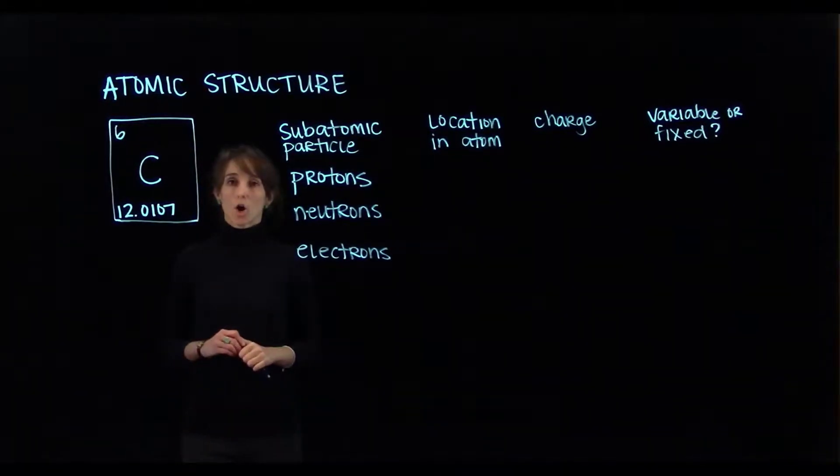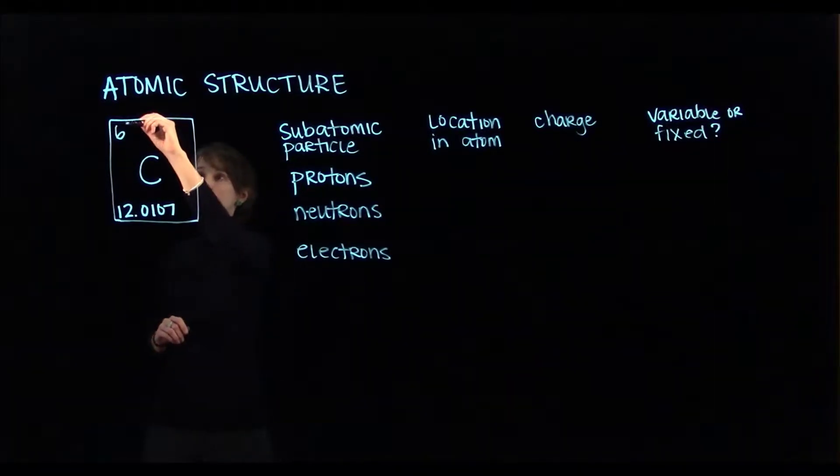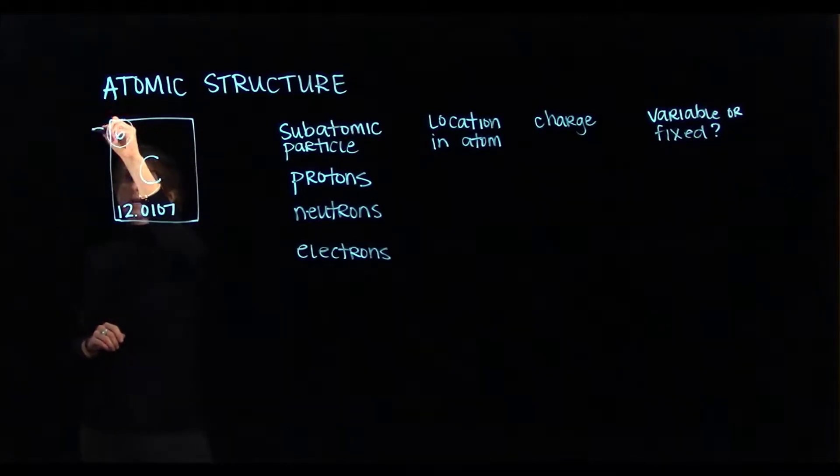To start drawing our carbon atom, we need to figure out how many protons it has. To do that, we look at the entry in the periodic table and find the whole number, which is the atomic number.